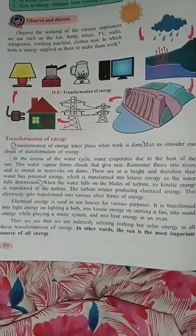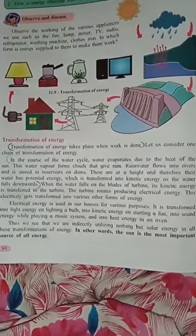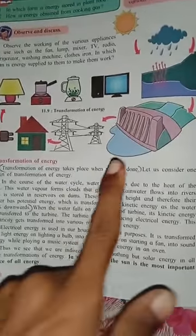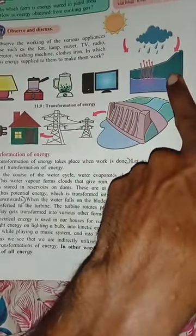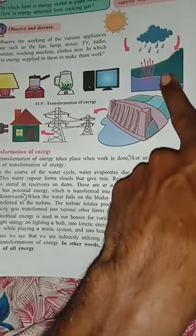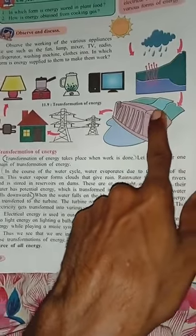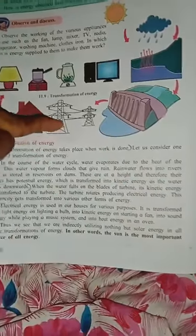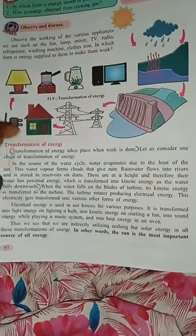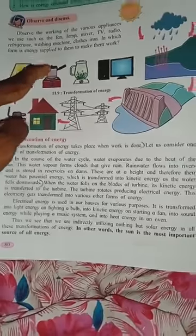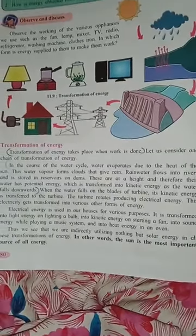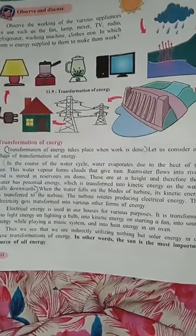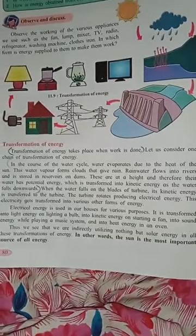In this way, electrical energy is used in our houses. This electricity — the rainwater collected in the dam reservoir goes to the electric transformation station and is supplied everywhere. It transforms into light energy on lighting a bulb, kinetic energy on starting a fan, sound energy while playing a music system, and heat energy in the oven.